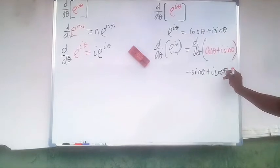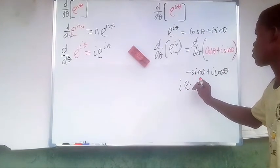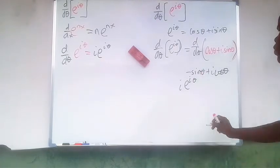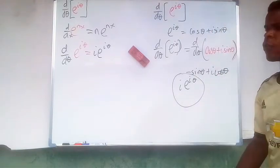Now, this is the same thing as saying i times e to the i theta. So this shows the derivative of e to the i theta.